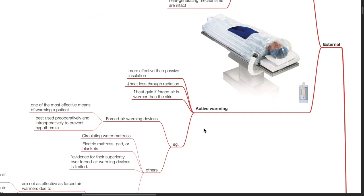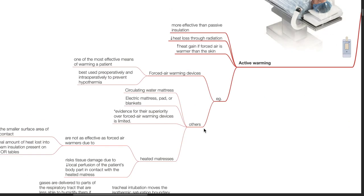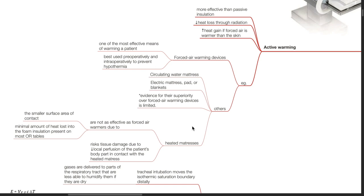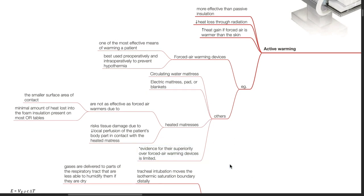Active external warming is more effective than passive insulation. This reduces heat loss through radiation and increases heat gain if forced air is warmer than the skin. Examples of active external warming include forced air warming devices, which is one of the most effective means of warming a patient. It is best used preoperatively and intraoperatively to prevent hypothermia. Other examples include circulating water mattresses, electric mattresses, pads or blankets, and heated mattresses. Evidence for their superiority over forced air warming devices is limited.